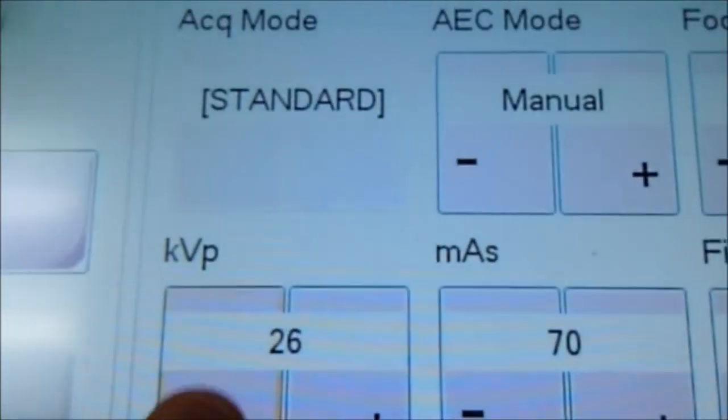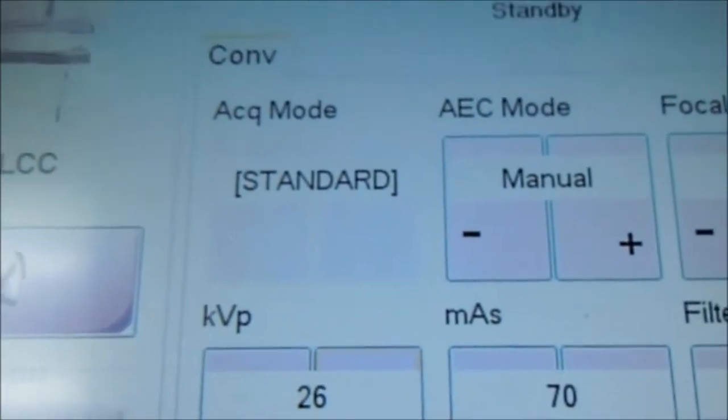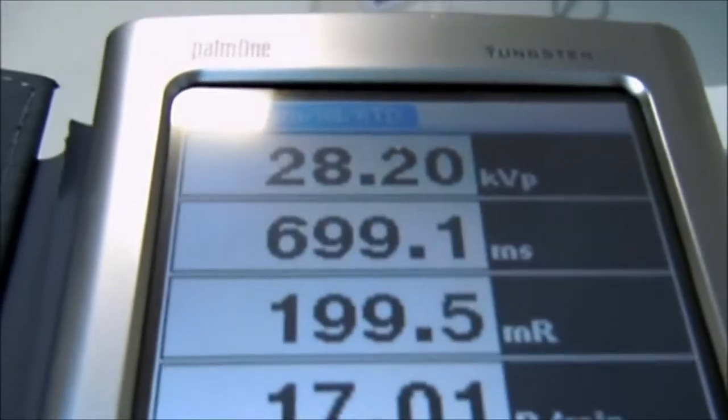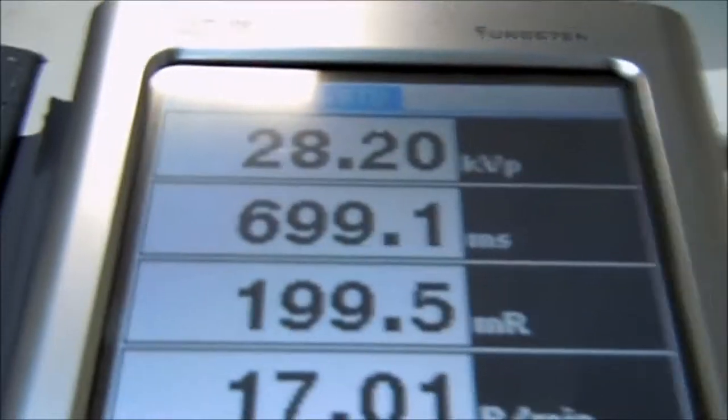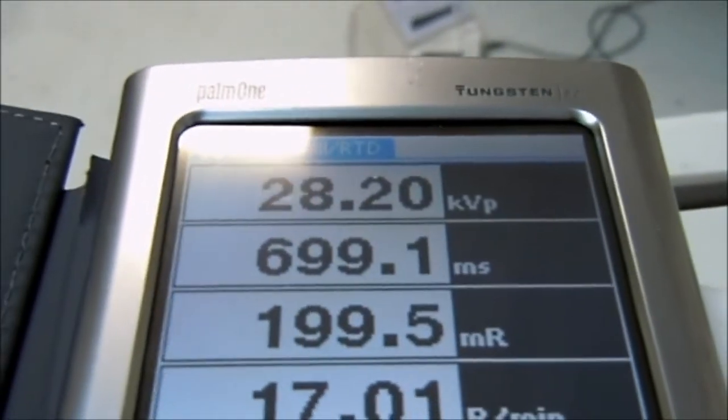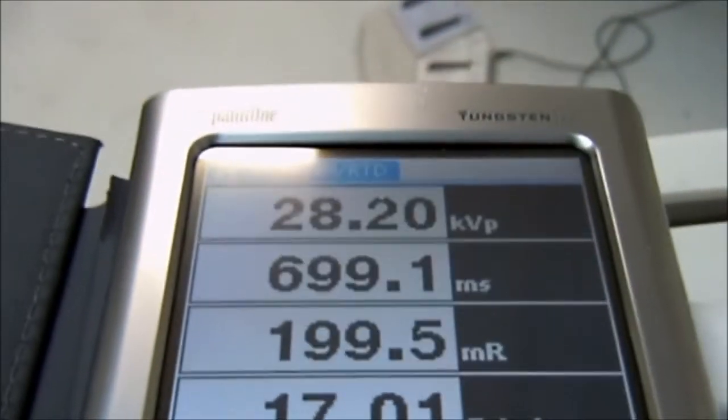So now I go back to KV and I select 25. We'll make an exposure. As you can see, it pops up. And it says 28.2 KV.